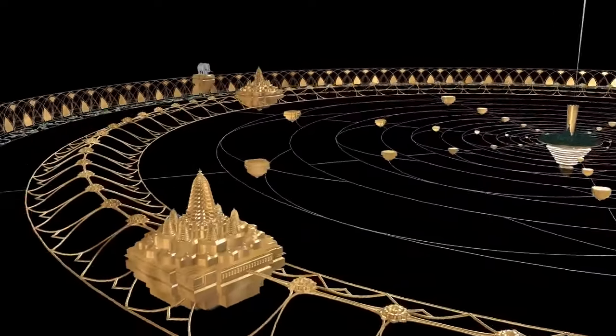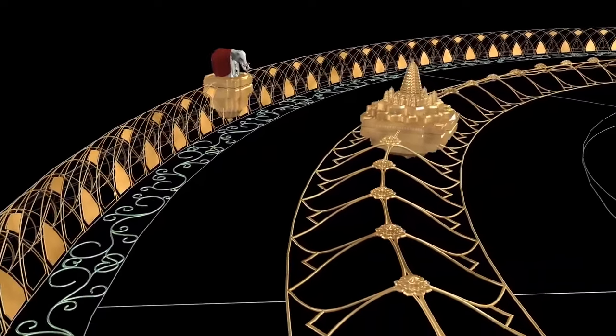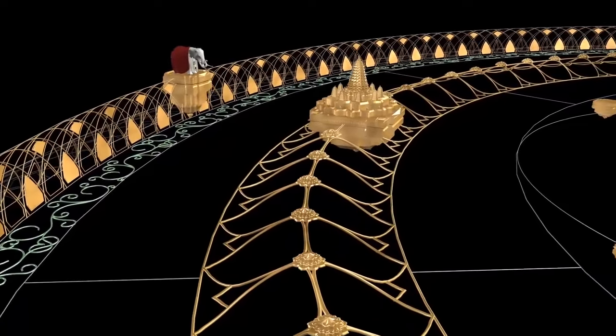On Manasotara Mountain, here on Pushkara Dweep, the sun travels above this mountain at the southernmost point of its annual orbit.